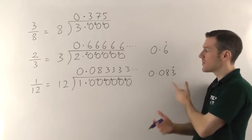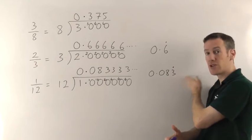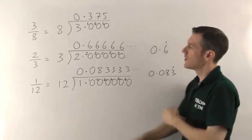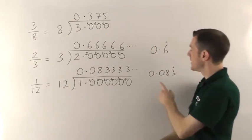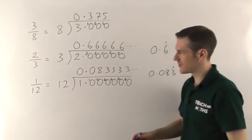So it's 0.083 and you put the dot above the 3 to indicate that it's the 3s that go on forever. So sometimes that can happen. You can have other stuff at the front first and then you'll hit a digit which just goes on forever. So 1/12 as a decimal is 0.083 recurring.